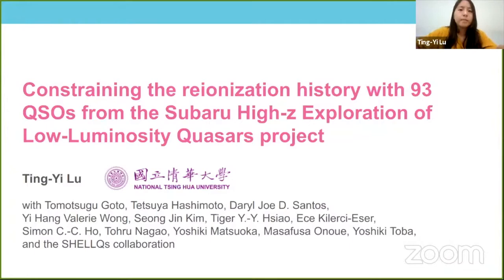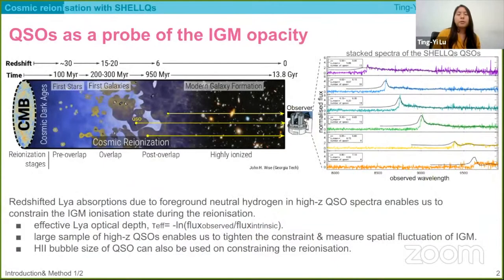As mentioned by previous speakers, quasars are a very powerful probe of reionization. Basically, we can measure the Lyman-alpha optical depth of absorption in the spectrum. And if you have many quasars, it is possible for us to constrain the dispersion of optical depth at certain redshifts. So it's quite important to have a large sample of quasars.